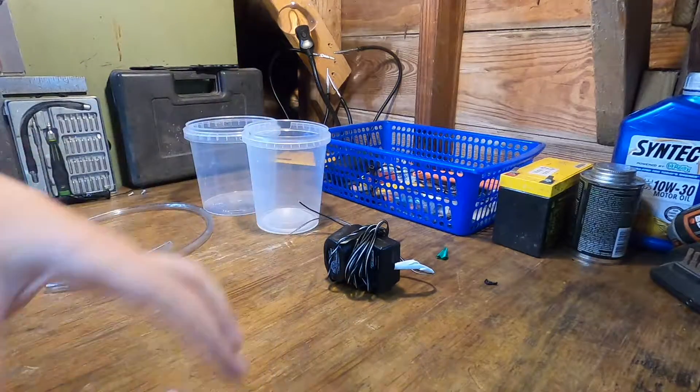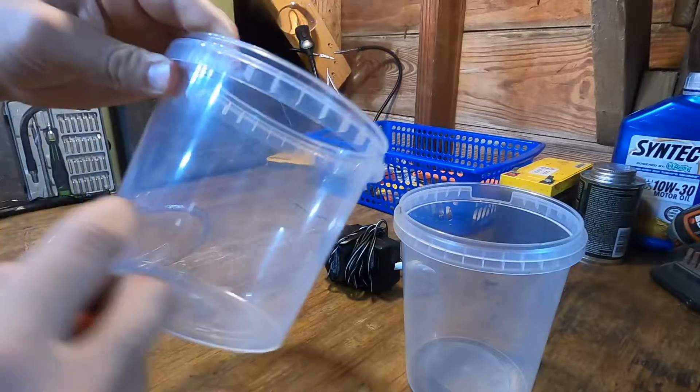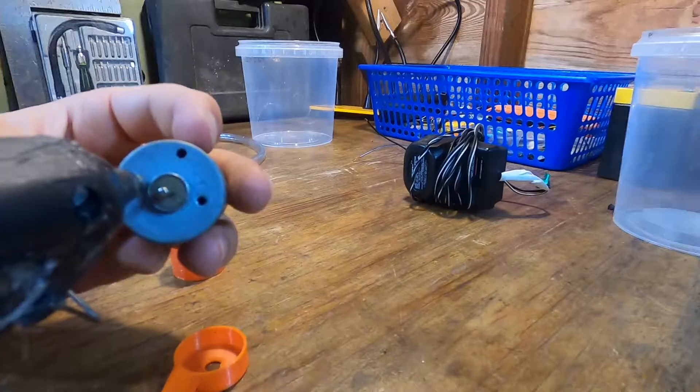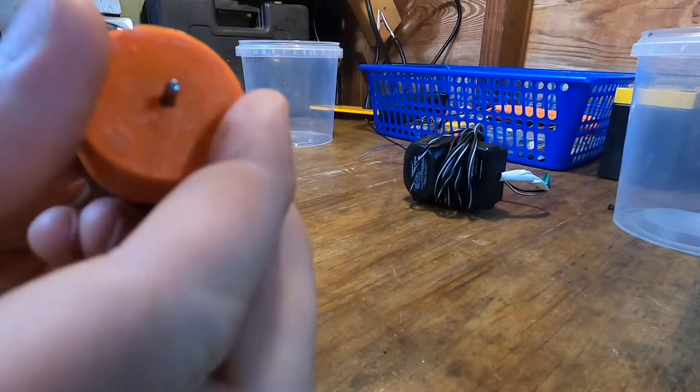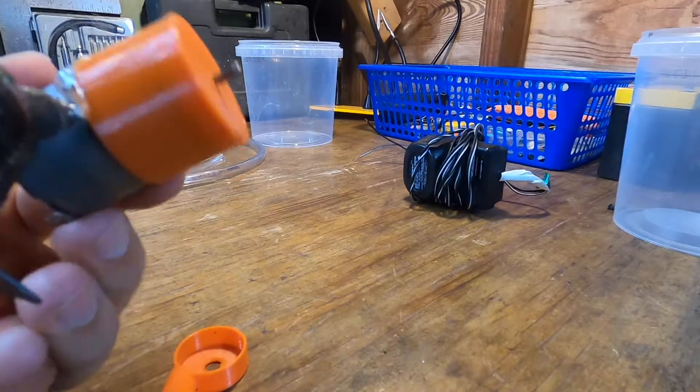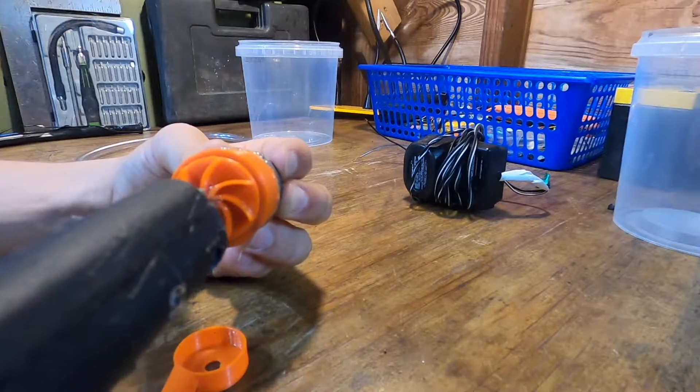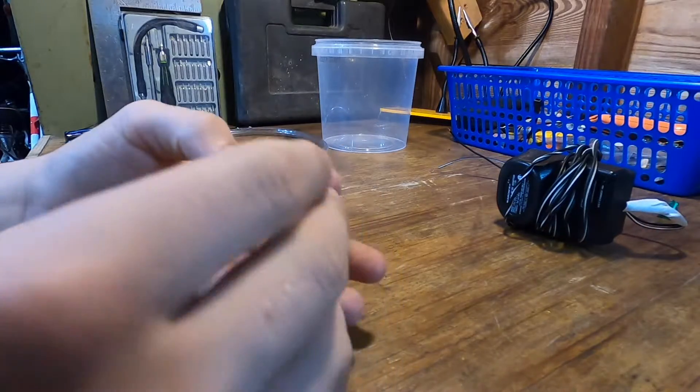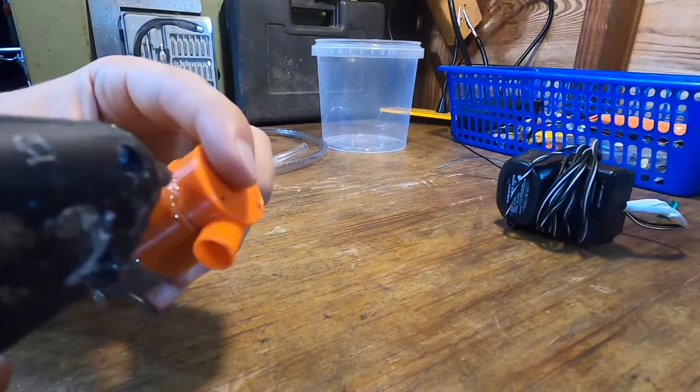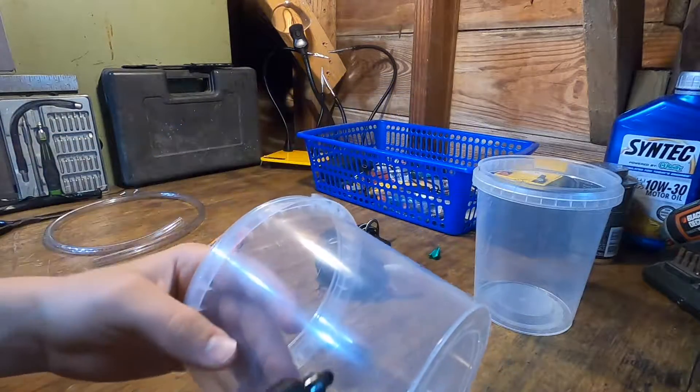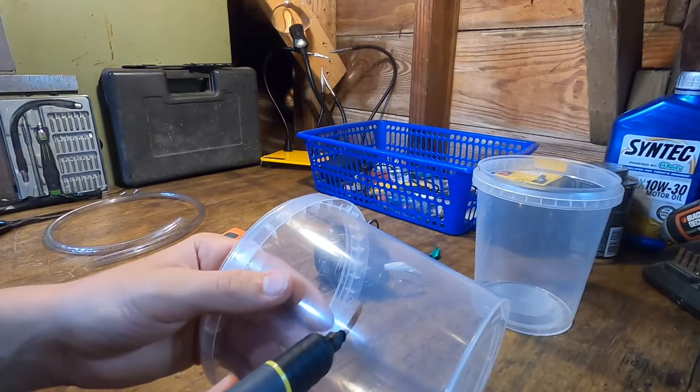And then after that we're going to get these two containers here. And we're just going to start cutting out the shape that we want. Alright so now we're going to cut out these dishes here. So I'm just going to get a sharpie and make a mark all the way around. And then we're going to cut that out.